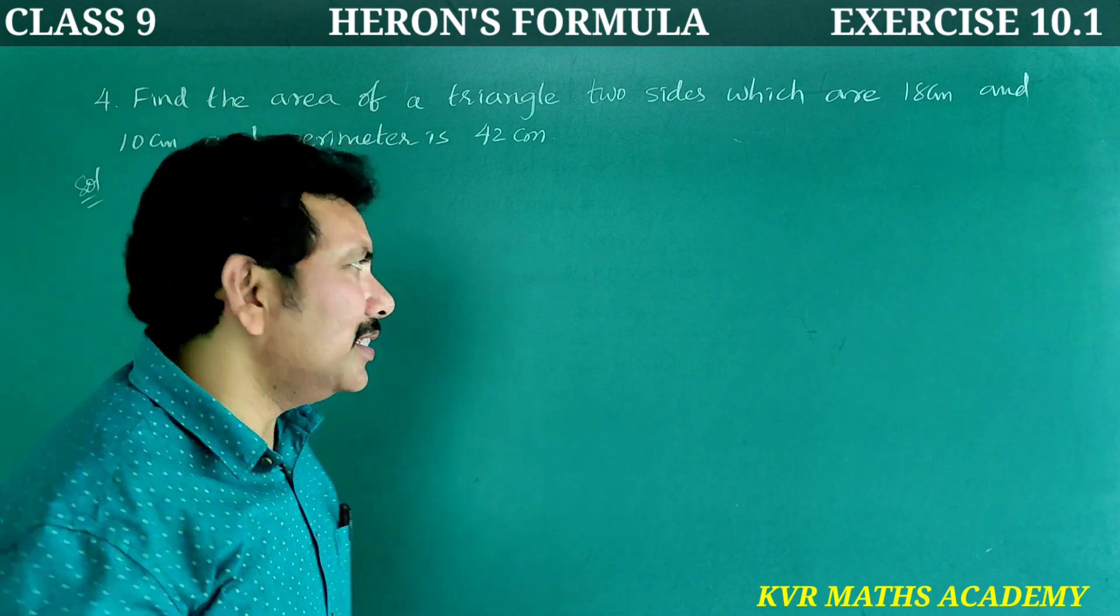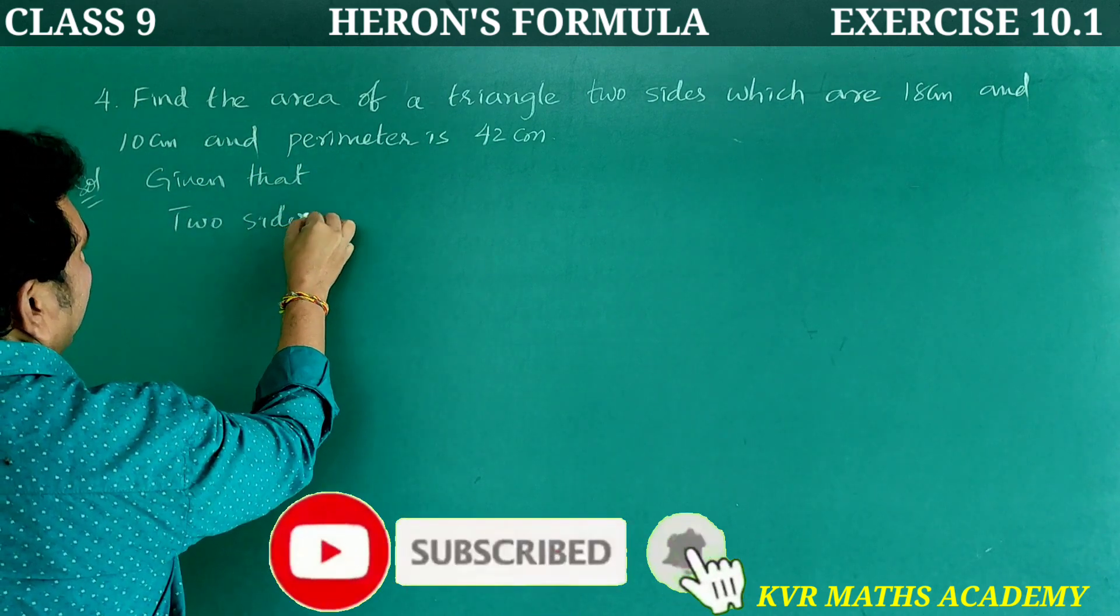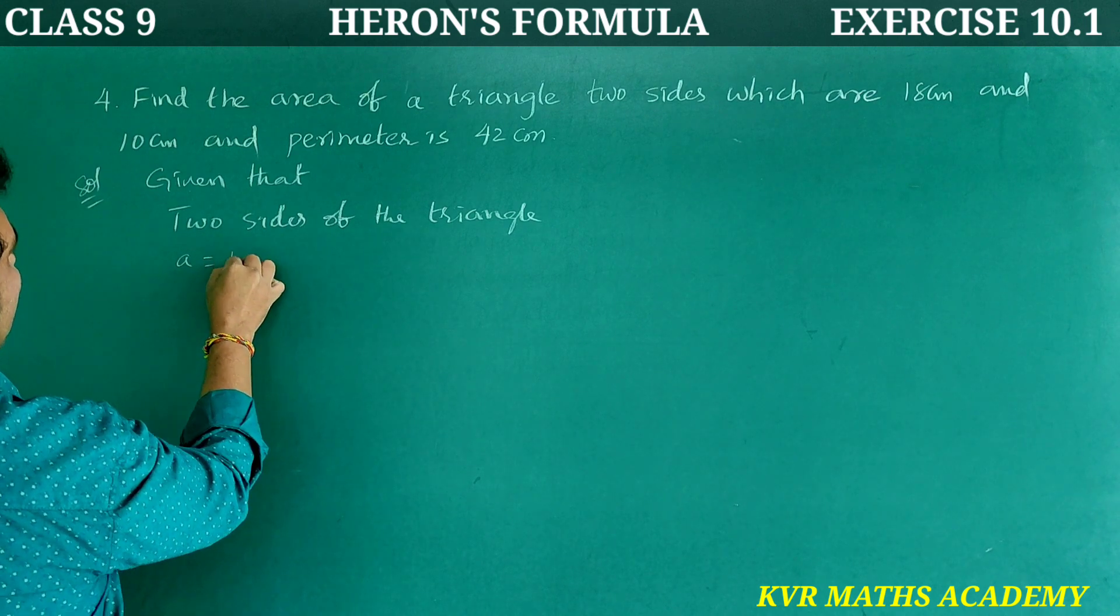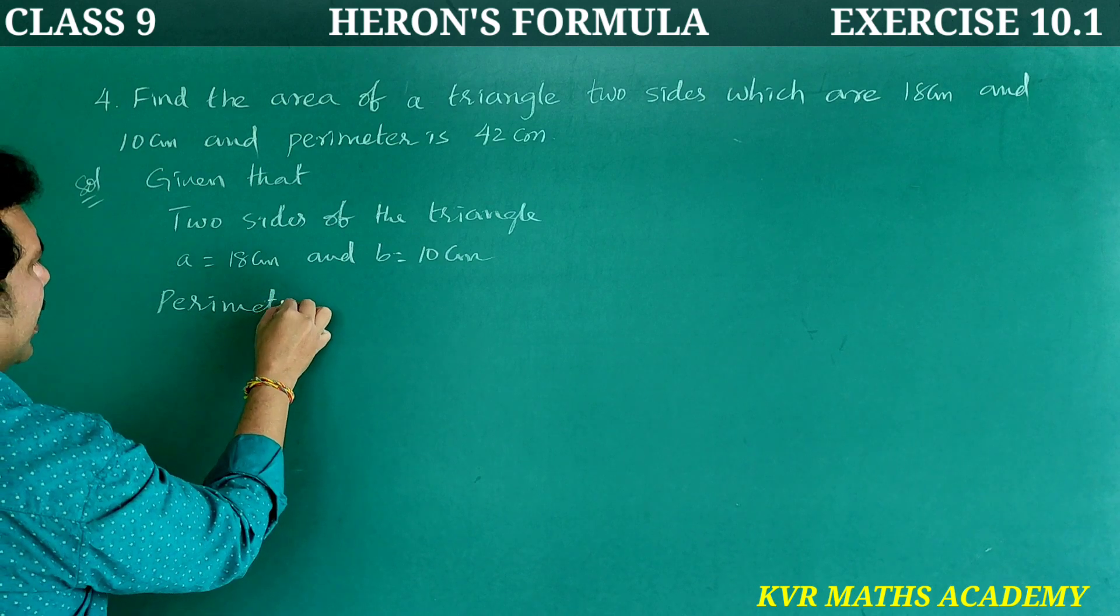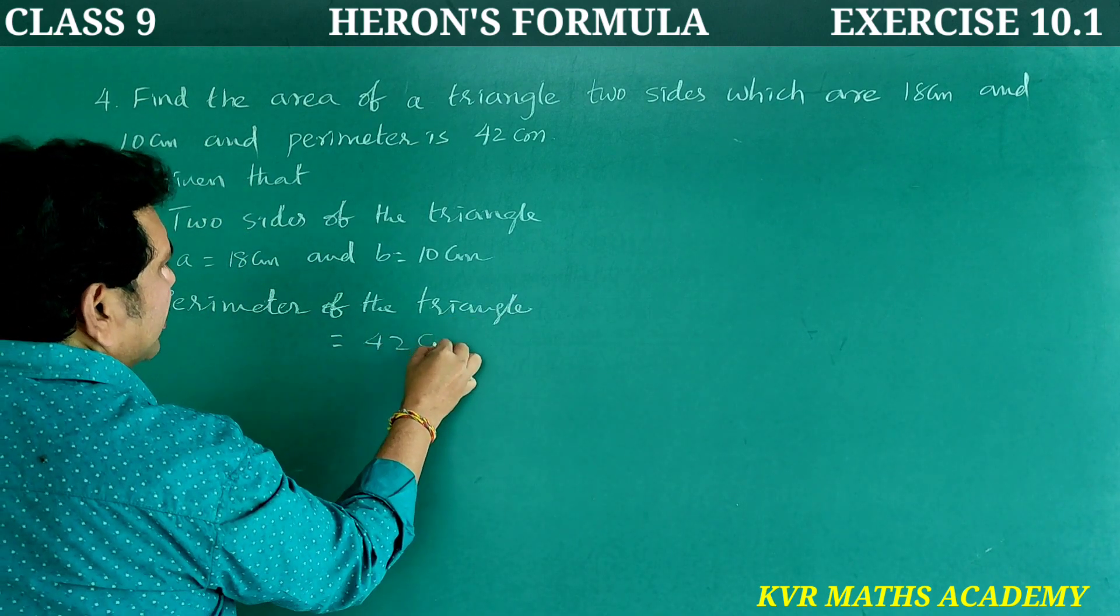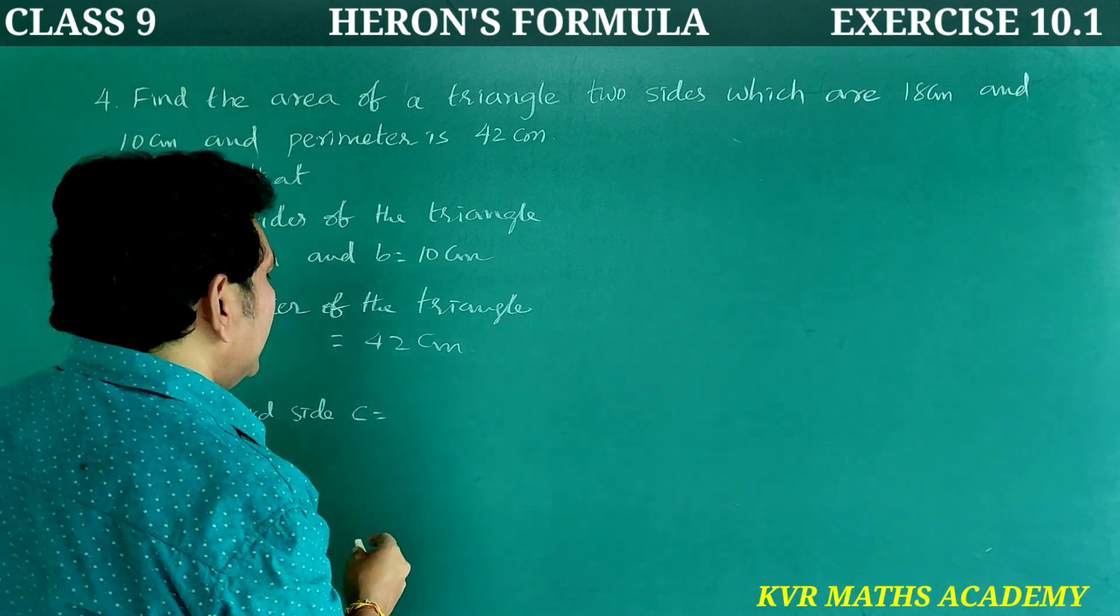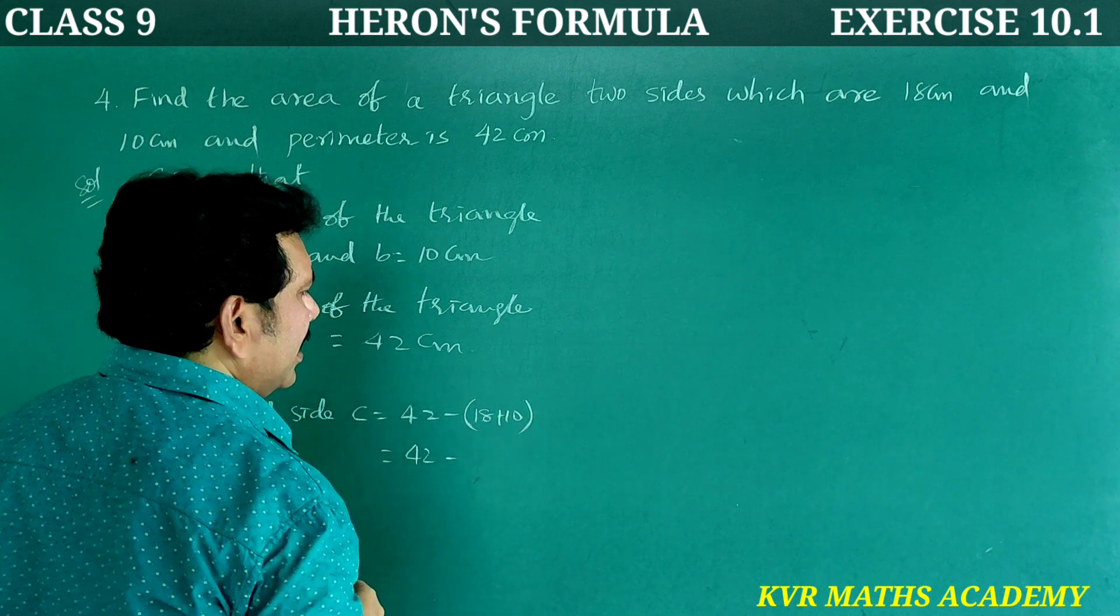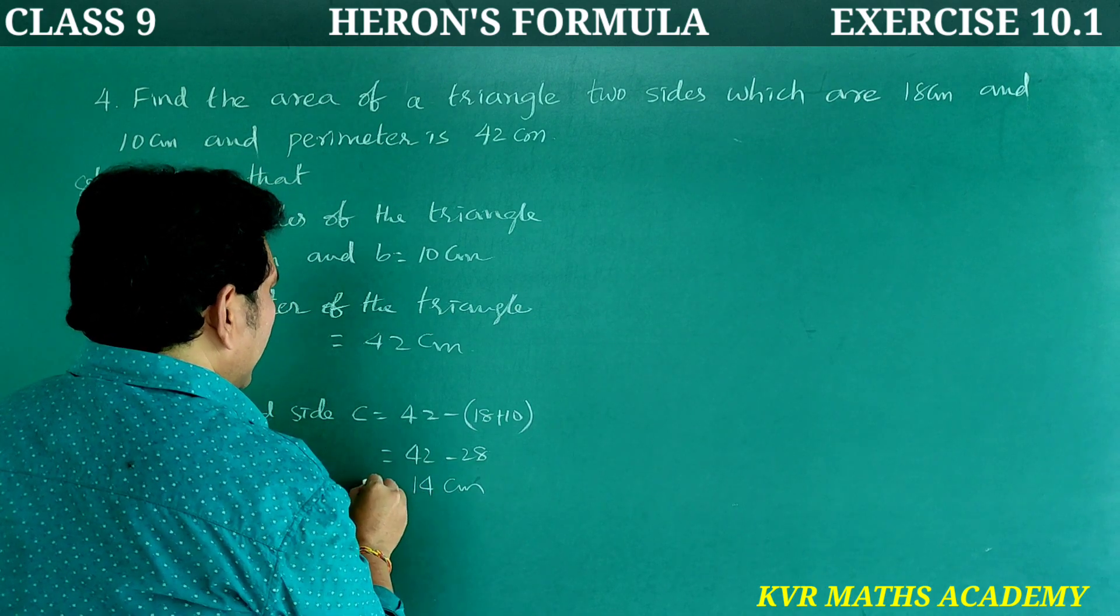Yes, solution. Given that two sides of the triangle A is equal to 18 centimeters and B is equal to 10 centimeters. Right. Now perimeter of the triangle is equal to 42 centimeters. Third side C is equal to 42 minus 18 plus 10, that is 42 minus 28. C is equal to 14 centimeters.